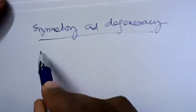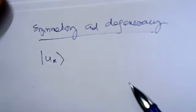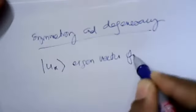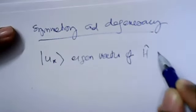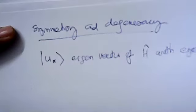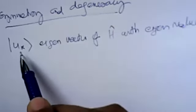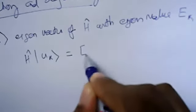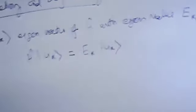We consider an eigenvector of H, call it u_k. So u_k is an eigenvector of the Hamiltonian with eigenvalue E_k. The eigenvalue equation is: H u_k = E_k u_k.